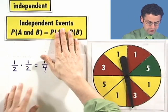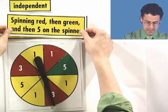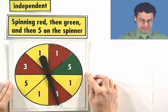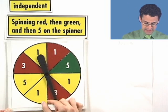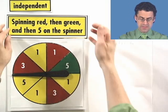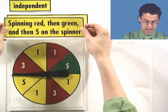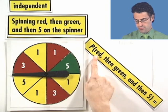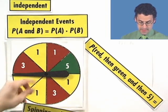Let's take a look at another example. The question now is: what's the probability of spinning a red, then a green, and then a five on the spinner? The spinner has no memory, so these really are independent events — all of them. What we do is take the product of each of the individual probabilities. To find the probability that we get a red, then a green, and then a five, we find the probability of each of those and multiply them together.